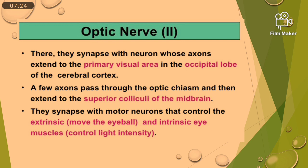There are synapses, and the neurons whose axons extend to the primary visual area — area number 17 — in the occipital lobe of the cerebral cortex. A few axons pass through the optic chiasma and then extend to the superior colliculi of the midbrain. These synapse with motor neurons that control extrinsic or extraocular movement and intrinsic eye muscles to control light intensity. If there is high intensity, there will be a separate mechanism; if low intensity, a separate mechanism — and that is controlled here.